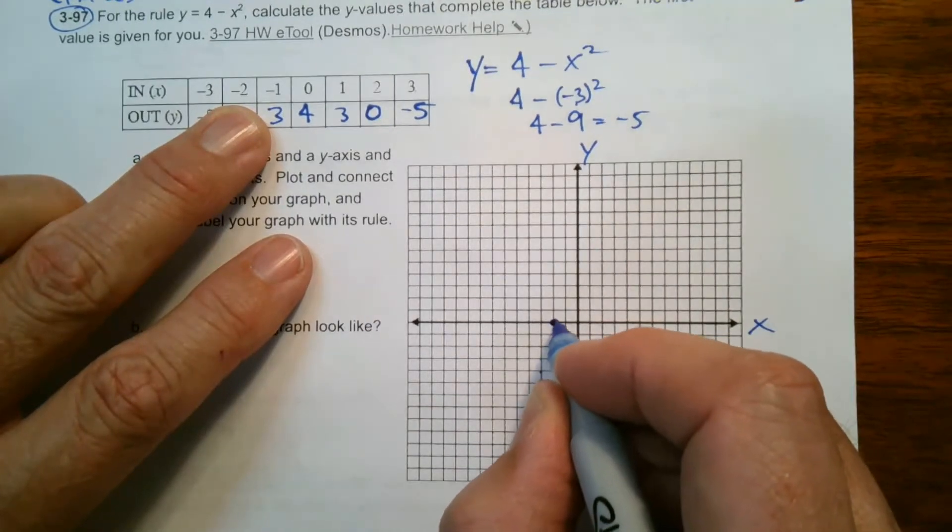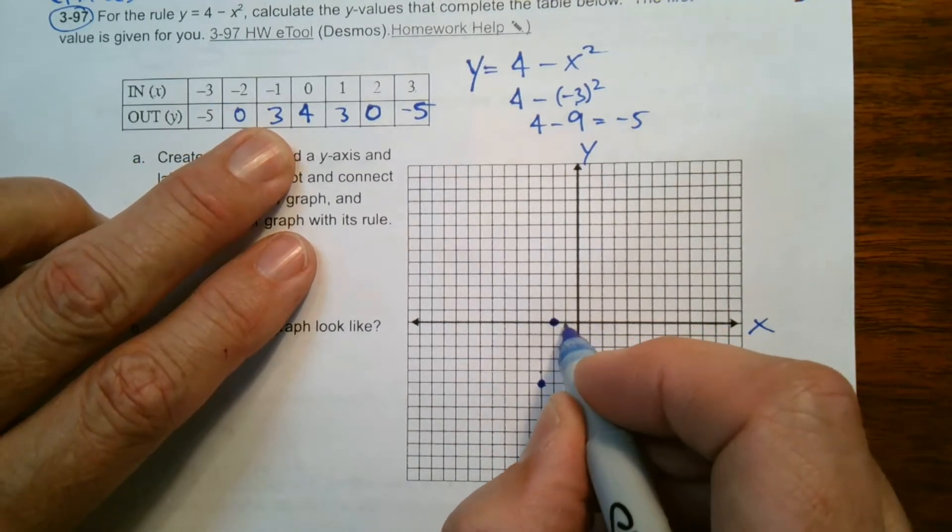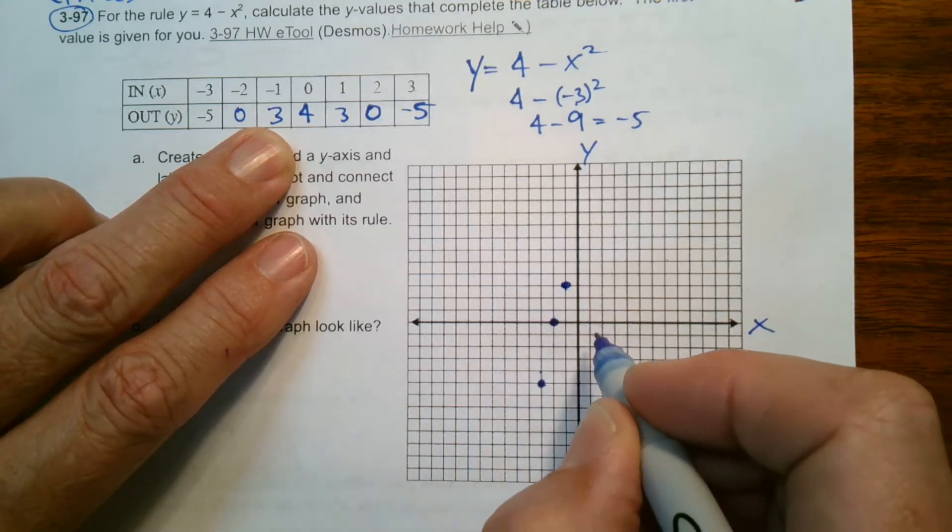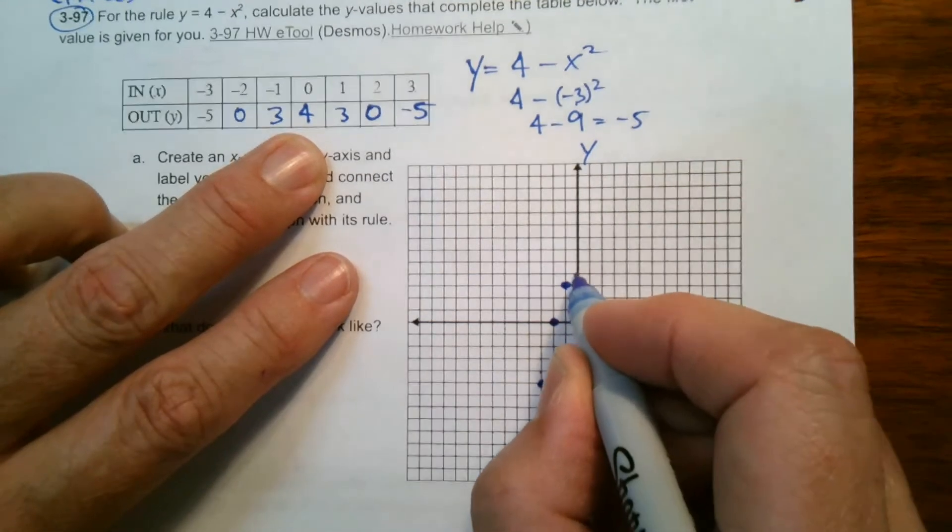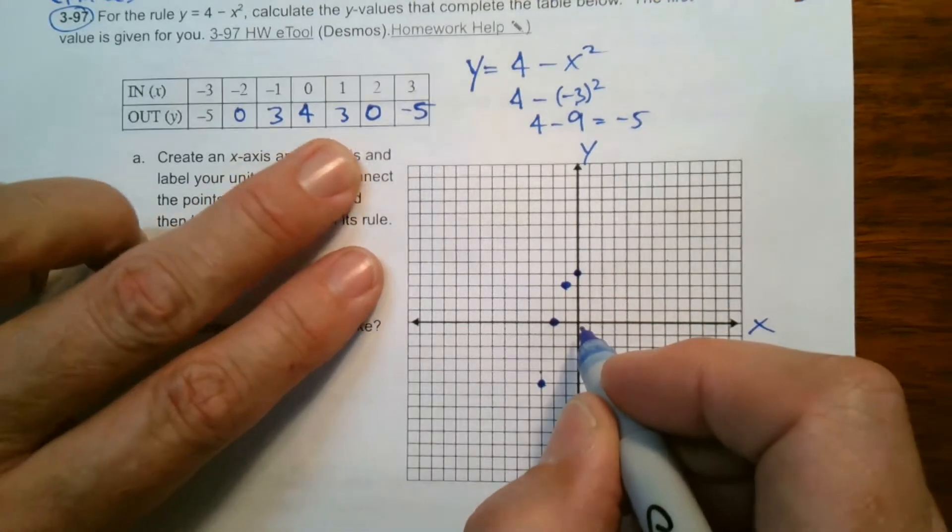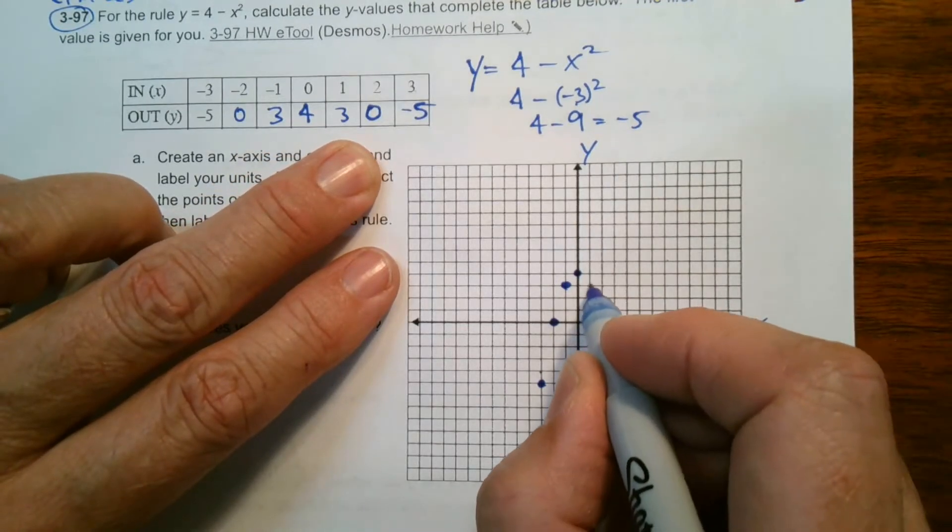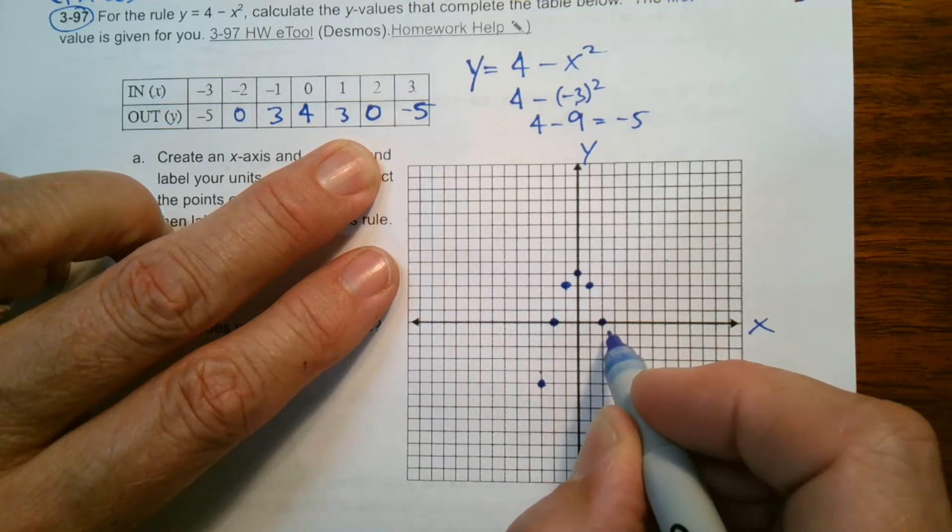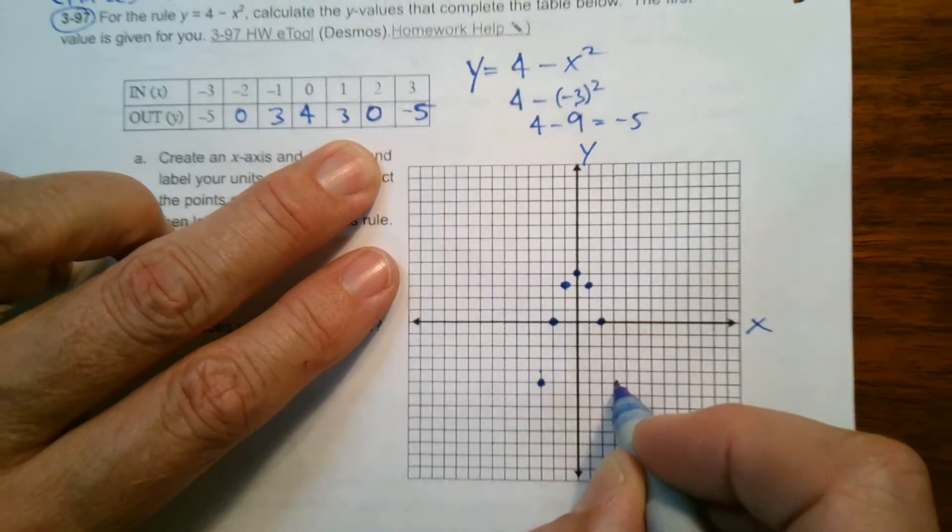Negative two, zero is right there. Here's negative one, positive three, one, two, three. So there's negative one, three. Zero, four is right here. Then one, three is right there. And then two, zero is right there. And then three, negative five is down here.